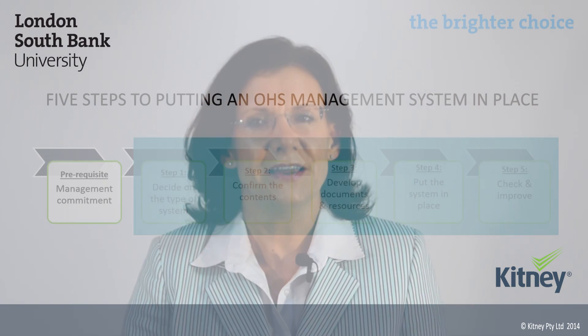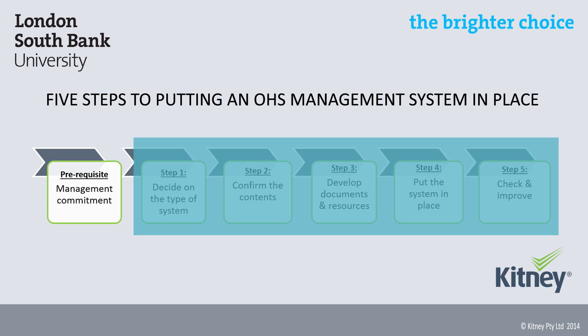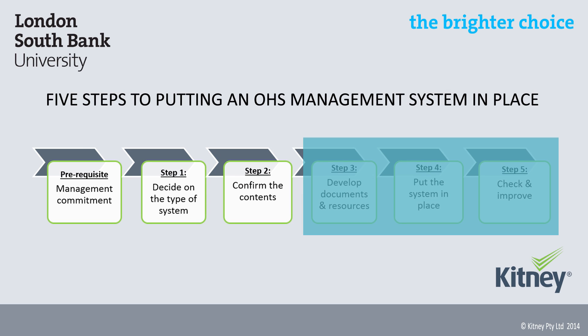Now, we've looked at what a management system is, its contents and the different types of systems, so this mini-lecture draws to a close by looking at the main steps to putting a management system in place. There's no set or prescribed approach, however the five steps shown on the slide here work well. Assuming management commitment and support has already been given, step one is to decide on the type of system needed — looking at business needs, legal obligations, the style and culture of the organisation, customer and client requirements, and what systems work well in other businesses in the same industry. Step two is to work out what will be included in the system — identifying legal obligations, hazards and risks of work, locations of work, and how staff will access the information they need.